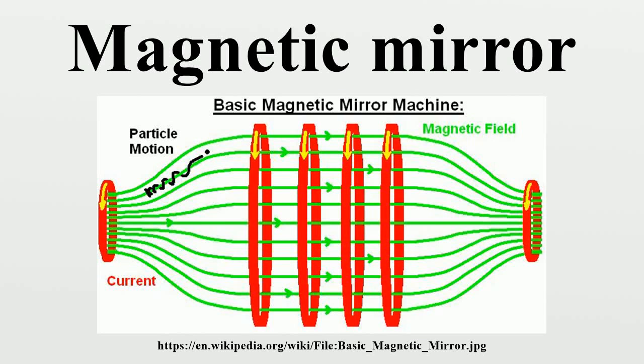A magnetic mirror is a configuration of magnetic field lines in which a charged particle is reflected from a high-density magnetic field to low-density magnetic field. This mirror effect will only occur for particles within a limited range of velocity and angle of approach.